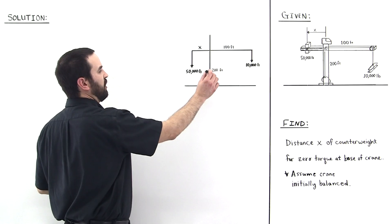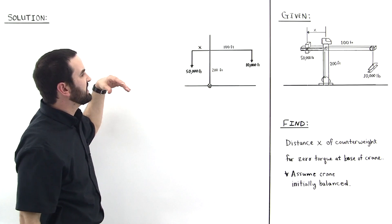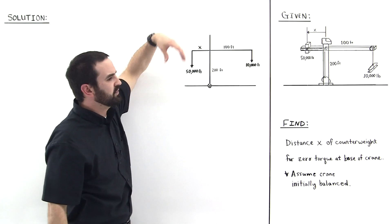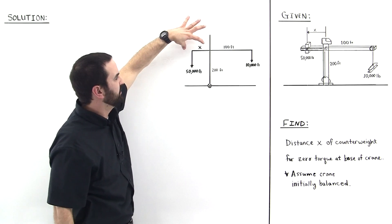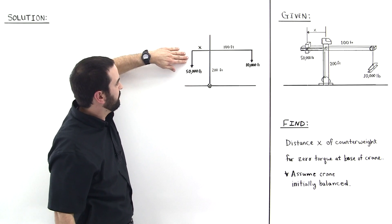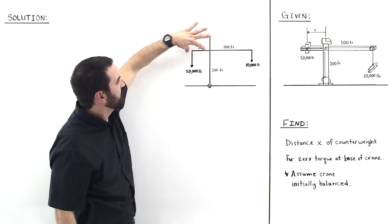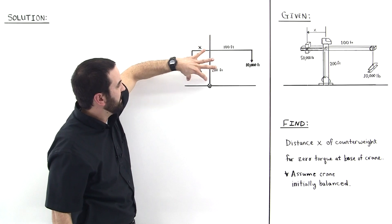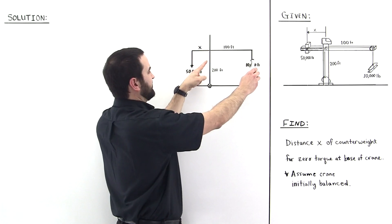Zero torque all along the spine of the crane because notice that the perpendicular moment arm that causes the torque—that is used to calculate the torque—is the same from the point of action to any point along the spine. And the same is true for this side.